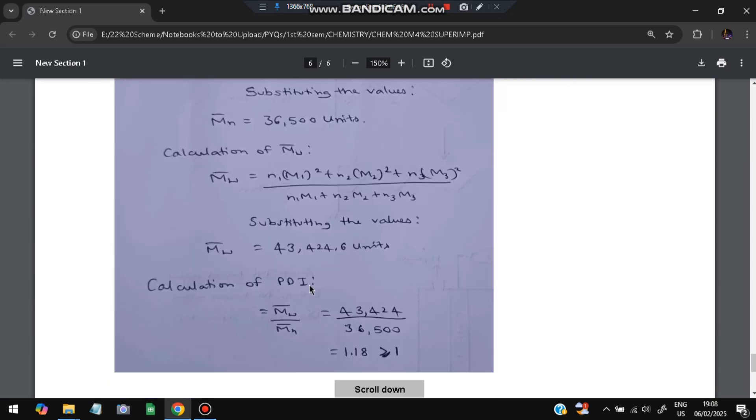So the PDI will be written as follows: Mw/Mn. So we'll be getting 1.818 which is greater than 1. So this ratio will be calculated at the last.